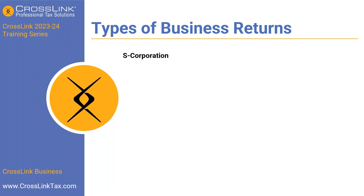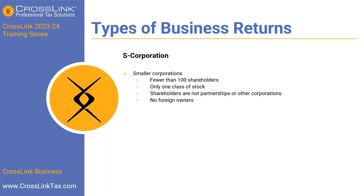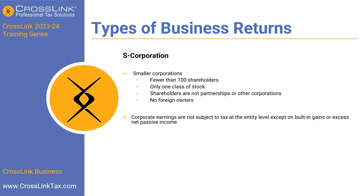We also have S corporations. A lot of times people who were sole proprietors decide to incorporate to get some protections and will become an S corp. S corporations are smaller corporations — fewer than 100 shareholders, only one class of stock — and the shareholders are not partnerships or other corporations, with no foreign owners involved. Corporate earnings are not subject to tax at the entity level, except on built-in gains or excess net passive income.